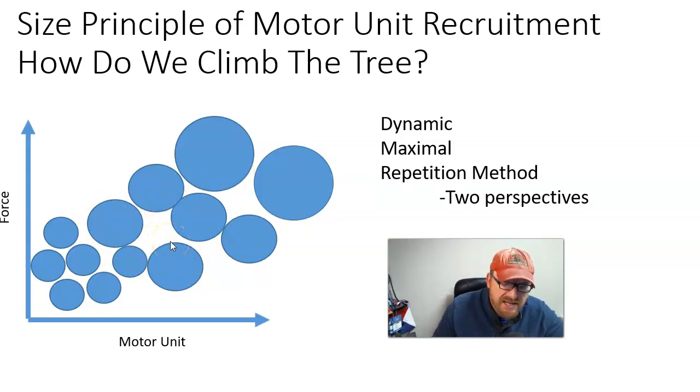Maximal method is just as it sounds—you lift heavy weight. If we did a one RM, all the available motor units would contribute to moving the bar on a bench press or back squat. But if you ran 10 miles and tried to do that, you'd have some of these motor units knocked out and you wouldn't have a full expression of your strength. That's why dynamic and especially maximal method is very sensitive to fatigue.